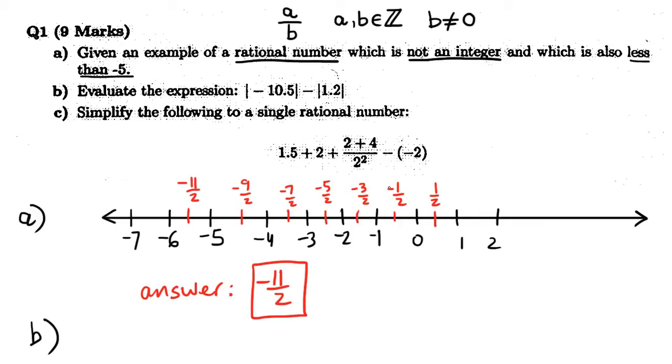Evaluate this absolute value expression. Well, that's pretty easy. The absolute value just means to ignore the sign of the number that's inside those absolute value bars. So, the absolute value of negative 10.5 is 10.5, and the absolute value of 1.2 is 1.2. And now that the absolute value bars are gone, it's very easy to just do the subtraction. So, this would be 9.3. That's easy.